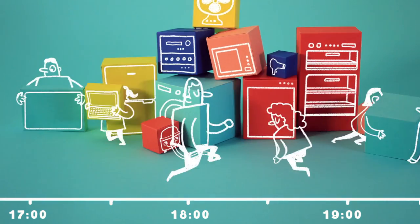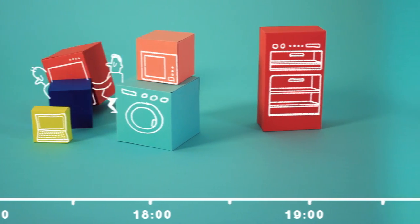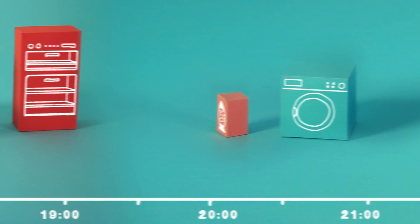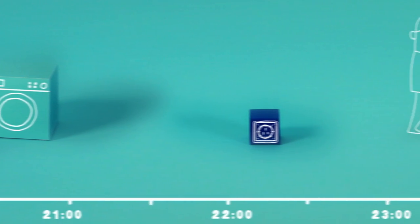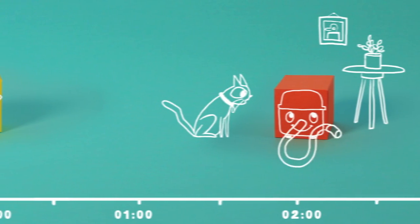And what would help you make that change? The promise of lower bills? Knowing your usage is less likely to call on those dirty power stations? Or could smart appliances, set to operate in off-peak hours, be the answer?